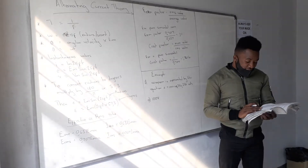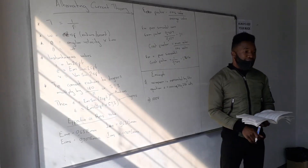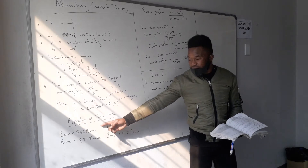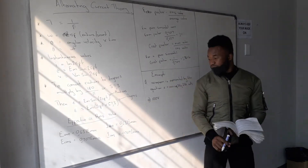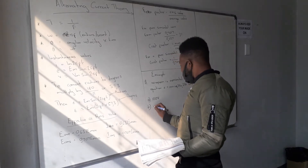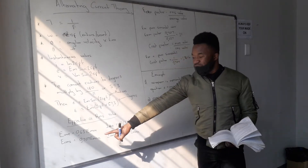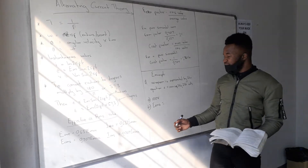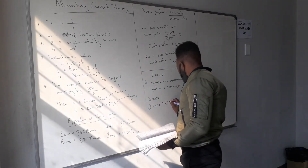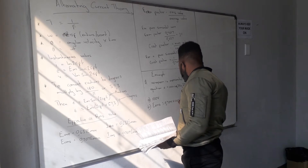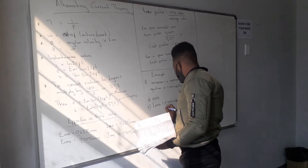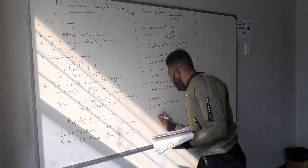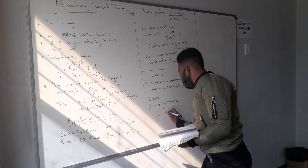On part B, they want the RMS and average values. To get E-RMS, use the formula: E-RMS equals 0.707 multiplied by the maximum value, which is 100, giving 70.7 volts. For the average, use E-average equals 0.637 multiplied by 100.